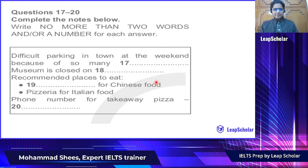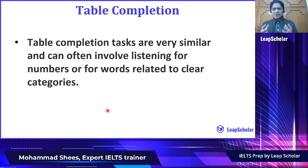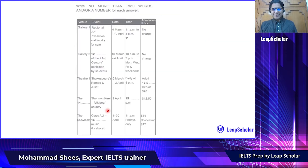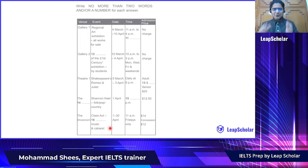Table Completion Task is very similar to Note Completion. You have to listen to words or numbers related to clear categories. For example, here we are talking about Gallery One — time; Gallery Two — event; Theater One — admission price. So there are different categories in the table, and you have to listen to the audio and fill those categories. Make sure you read the instructions carefully.